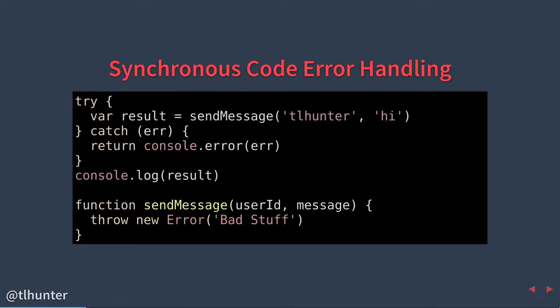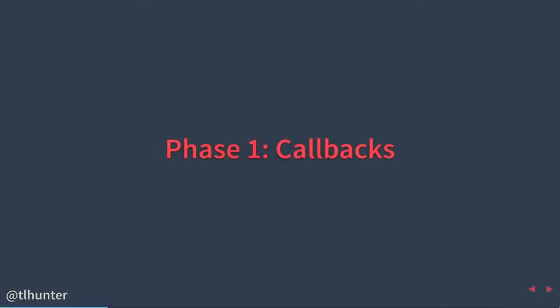Error handling with this synchronous pattern uses try/catch. You wrap your call to sendMessage in a try, then catch errors if they occur. In this case, we try to call sendMessage, but inside sendMessage we throw an error instead of doing any work. That gets caught in our catch, and we print the error message to standard error. Otherwise, if it were to succeed, it would have called the console.log below.